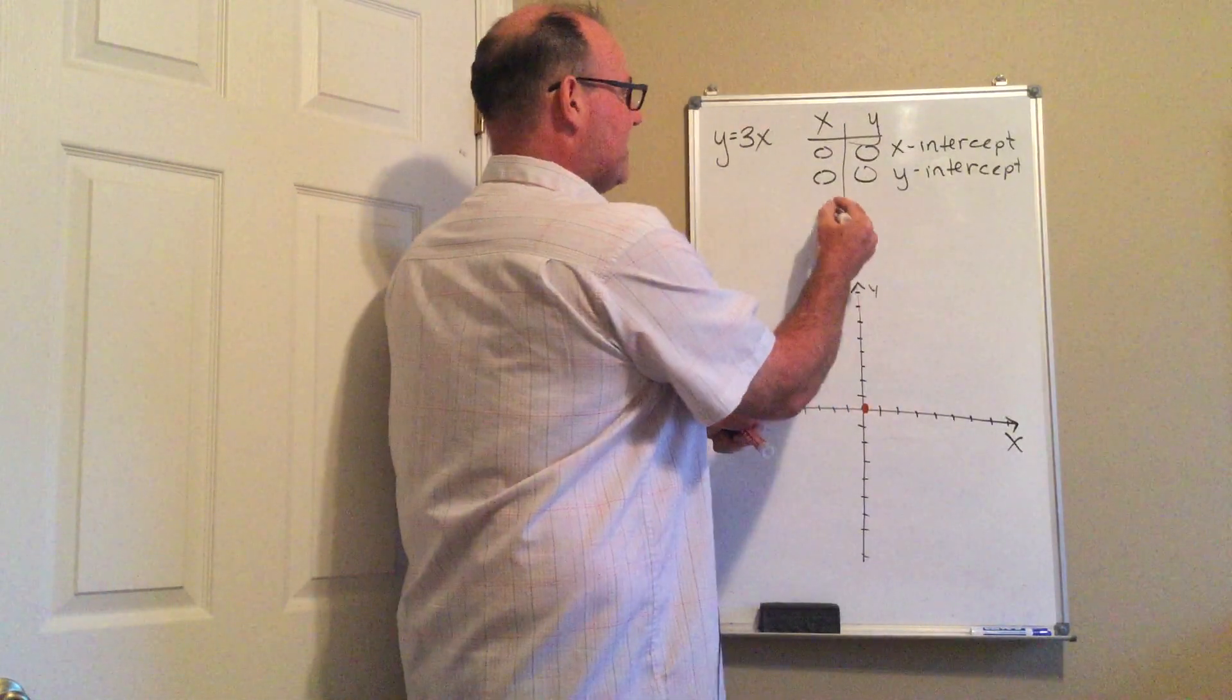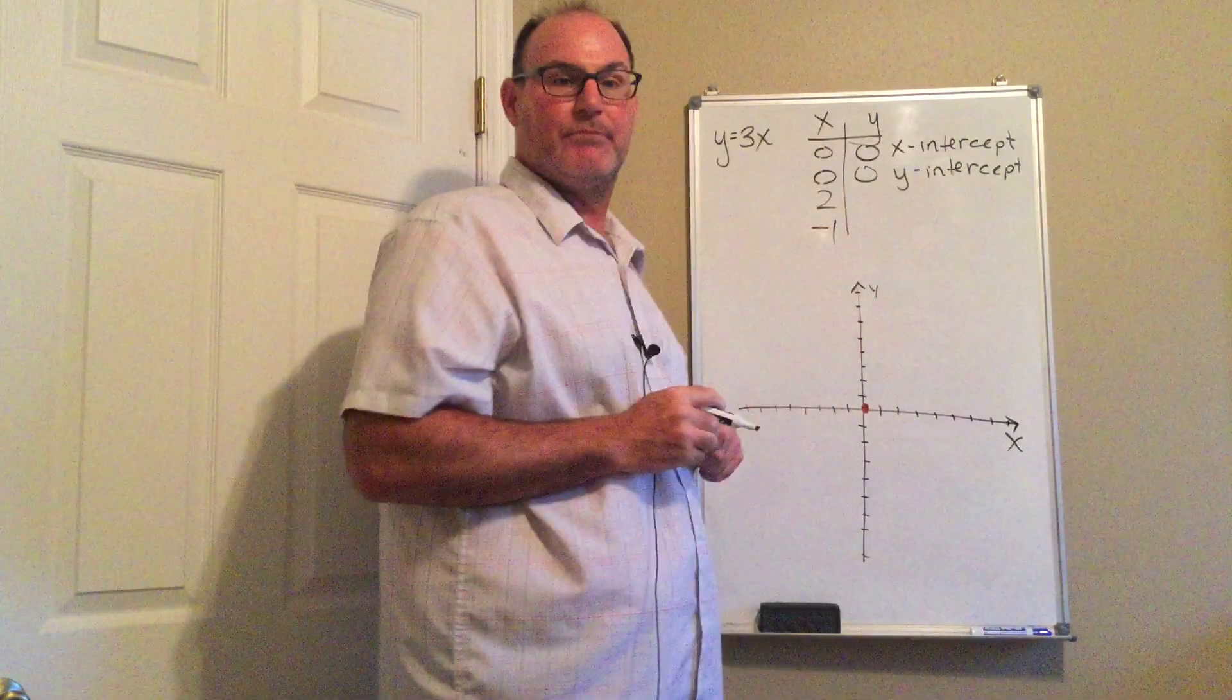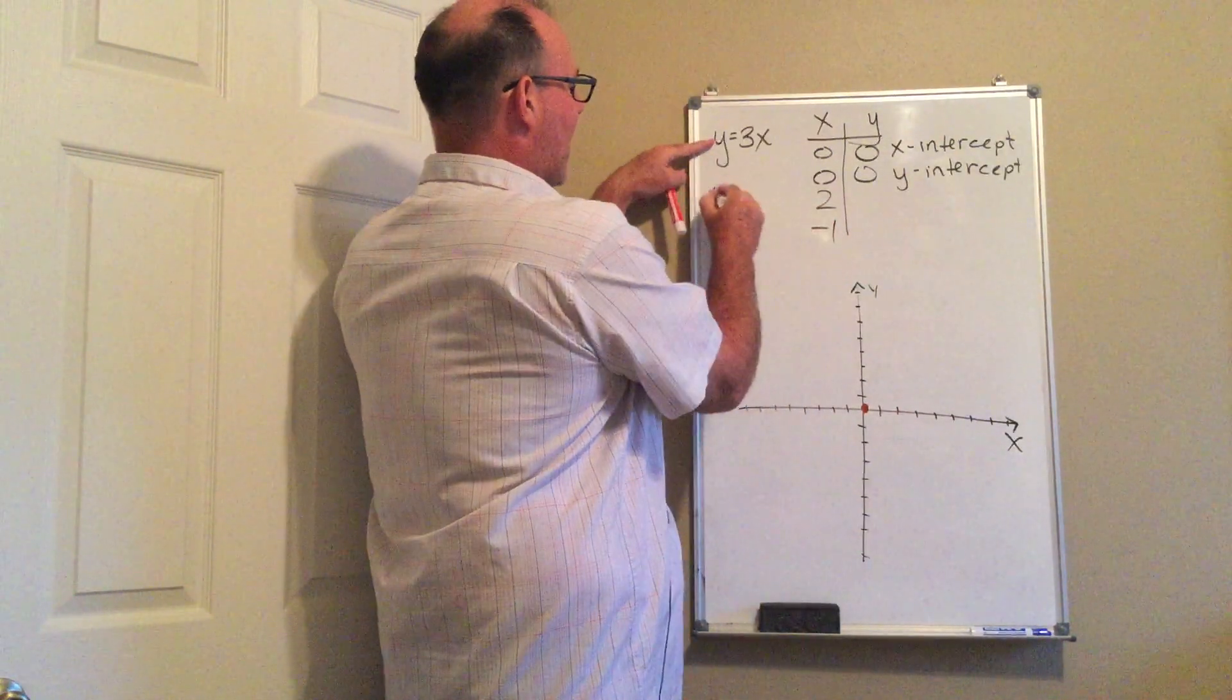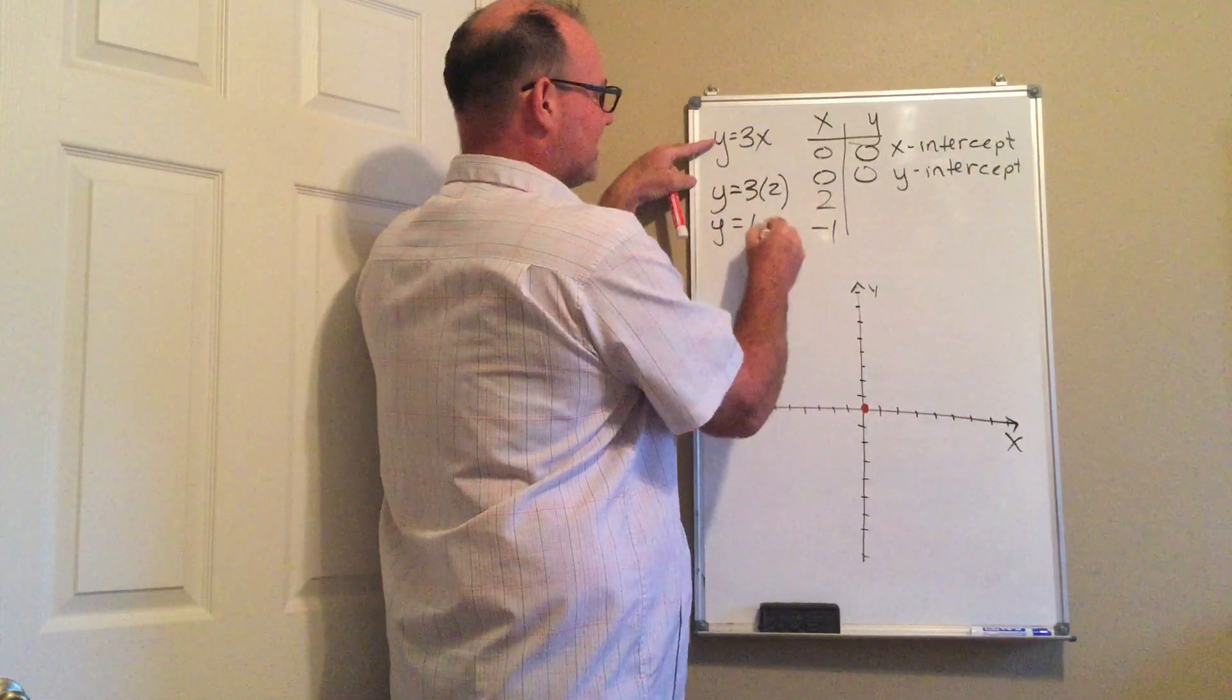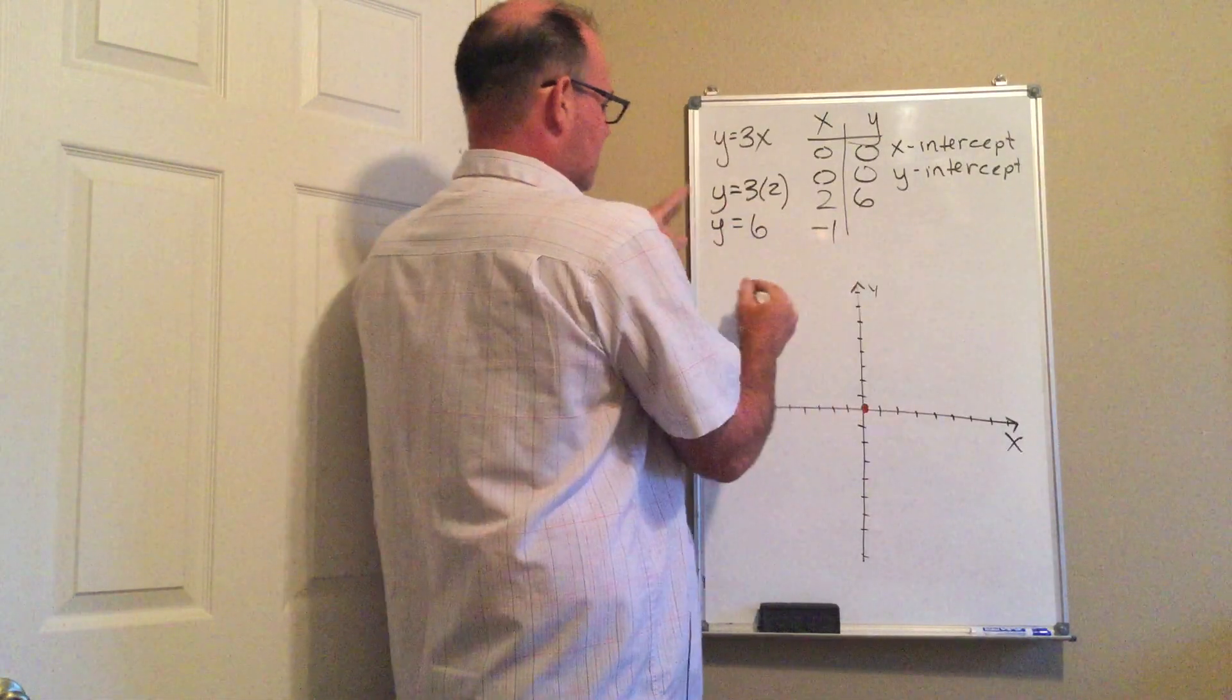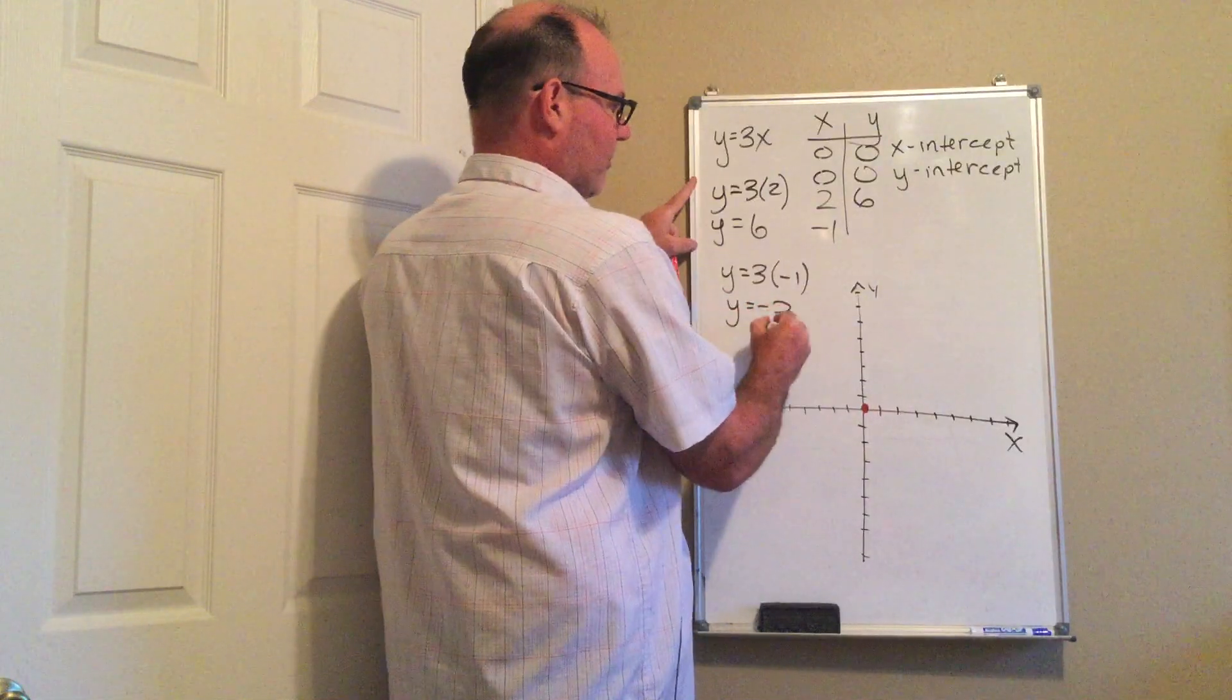So for instance, you might pick the x value two and you might pick the x value negative one just to get some variety. So when I put two in, I get y is equal to three times two. So y equals six. When I put in negative one, I get y equals three times negative one. So y equals negative three.